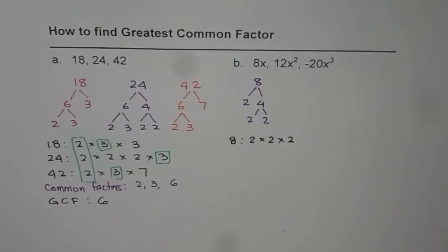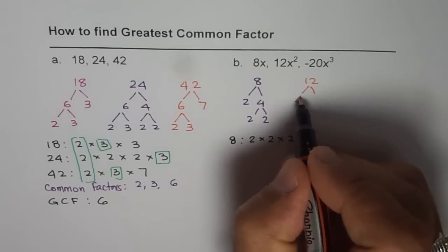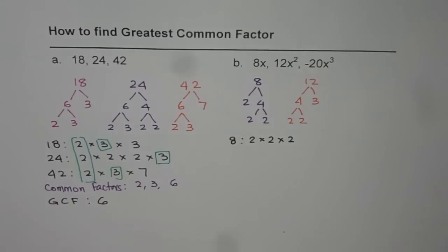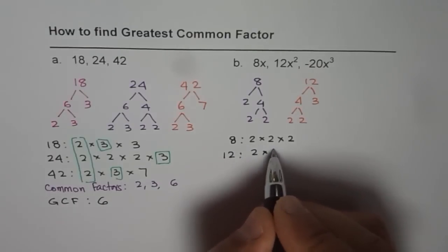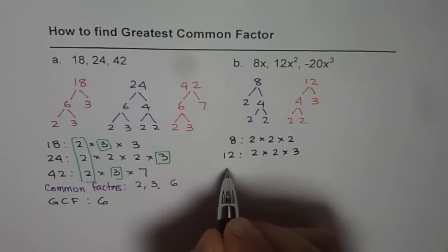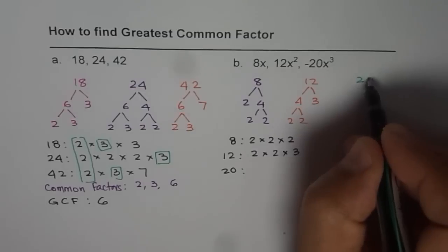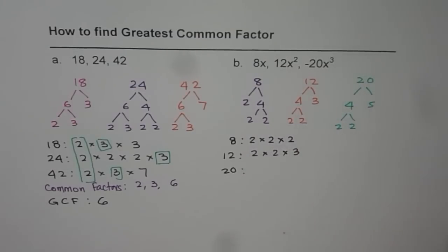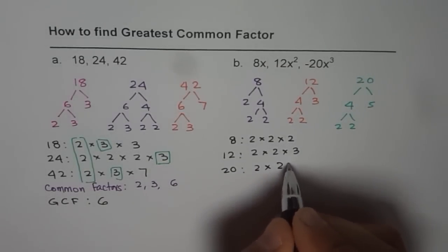Similarly, the prime factors for 12: 4 times 3 is 12, and 4 could be written as 2 times 2, so for 12 prime factorization gives 2 times 2 times 3. Now for minus 20, the minus is one of the factors. For 20, the factors are 4 times 5, and 4 could be written as 2 times 2. So for 20 the factors are 2 times 2 times 5.